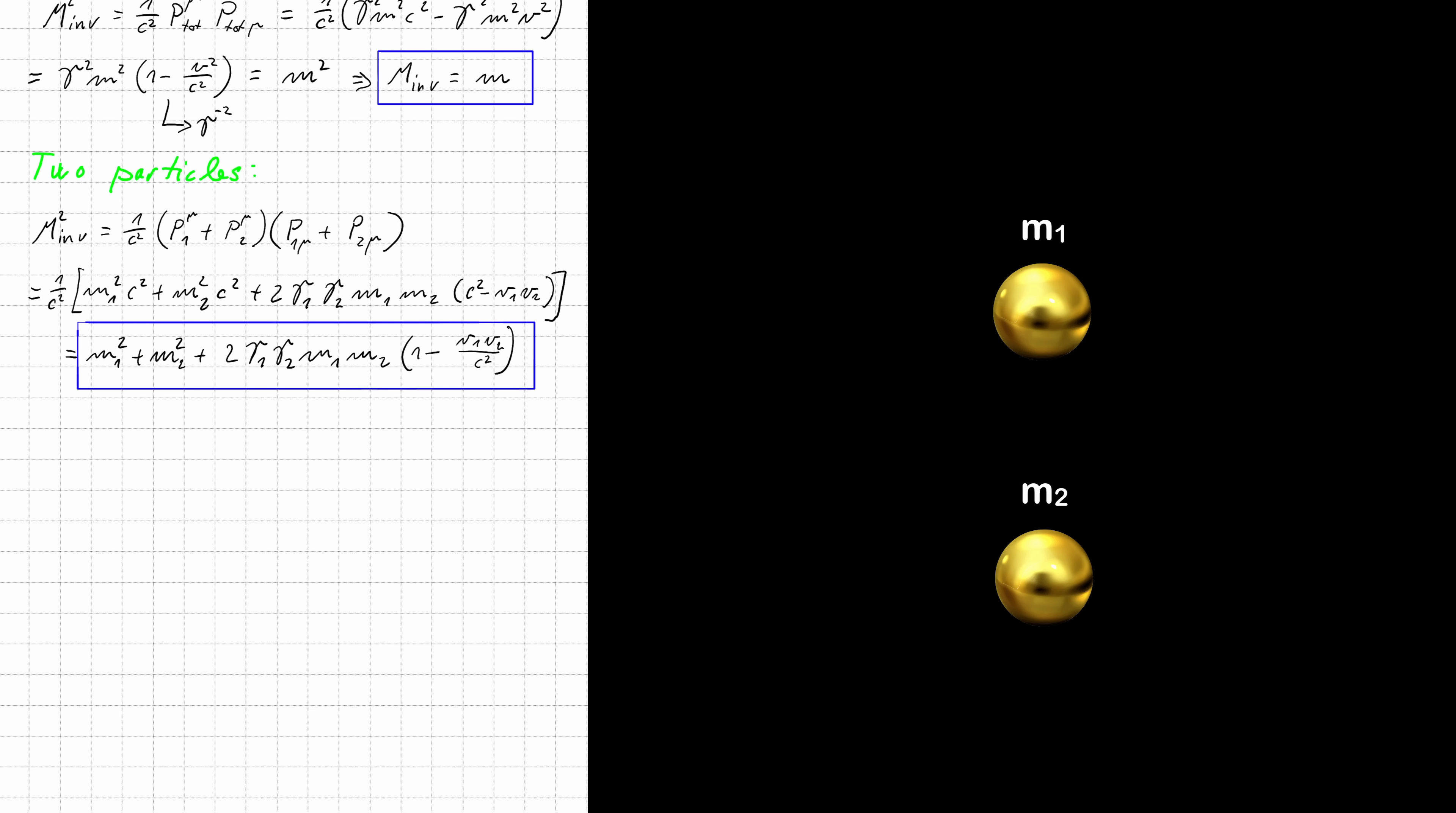If you work out the invariant mass, you would get this expression, where you have this extra relative gamma term, which looks like this. Now, if you have two particles moving with the same velocity in the same direction, then these gammas are the same. And this part here becomes inverse gamma squared. And everything cancels out, leaving you only with this expression. This you can rewrite like this and get rid of the square.